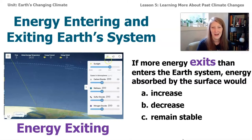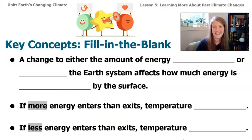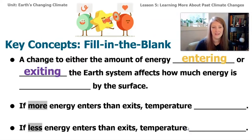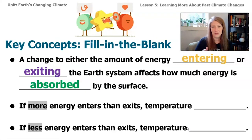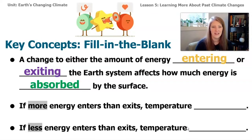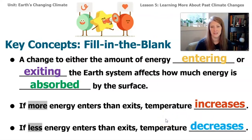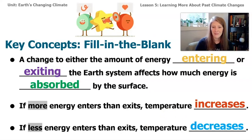We've figured out our first key concept for today's lesson. A change to either the amount of energy entering or exiting Earth's system affects how much energy is absorbed by the surface. The word absorbed just means to take something in — like water absorbed by a paper towel. So: if more energy enters than exits, temperatures would increase. And if less energy enters than exits, temperature decreases. These are key concepts we started figuring out in lesson four.